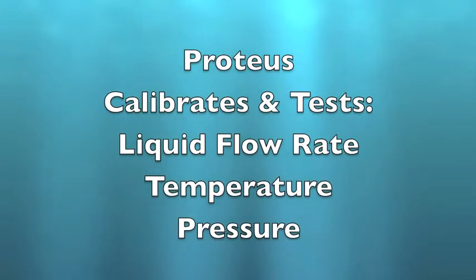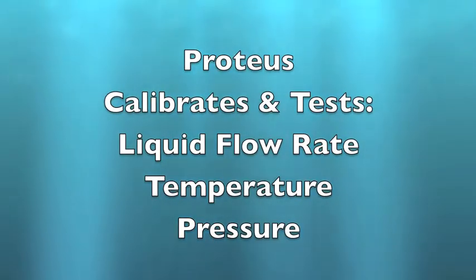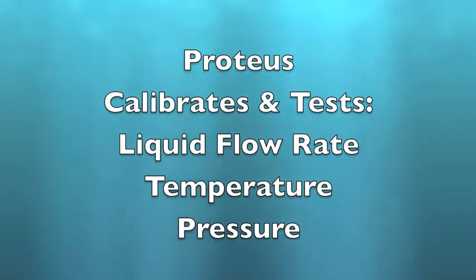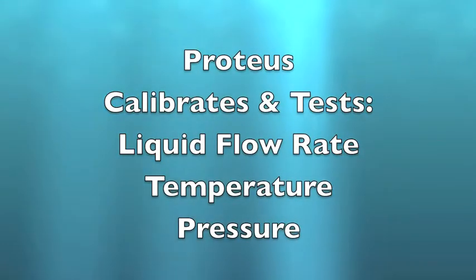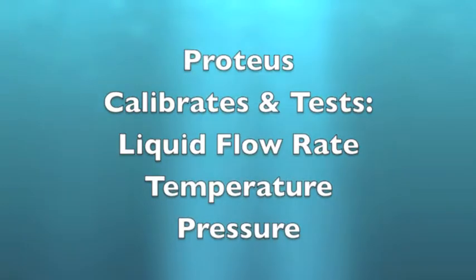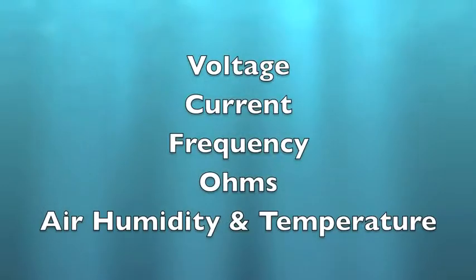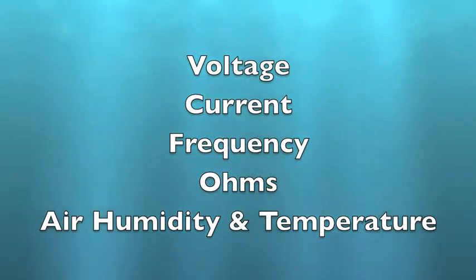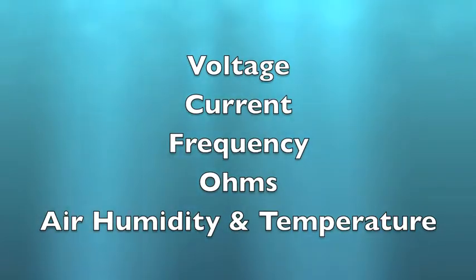Proteus must calculate measurement uncertainty for all of the things that it calibrates and tests: liquid flow rate, temperature, and pressure, as well as all other units measured in those calibrations — voltage, current, frequency, ohms, and air humidity.